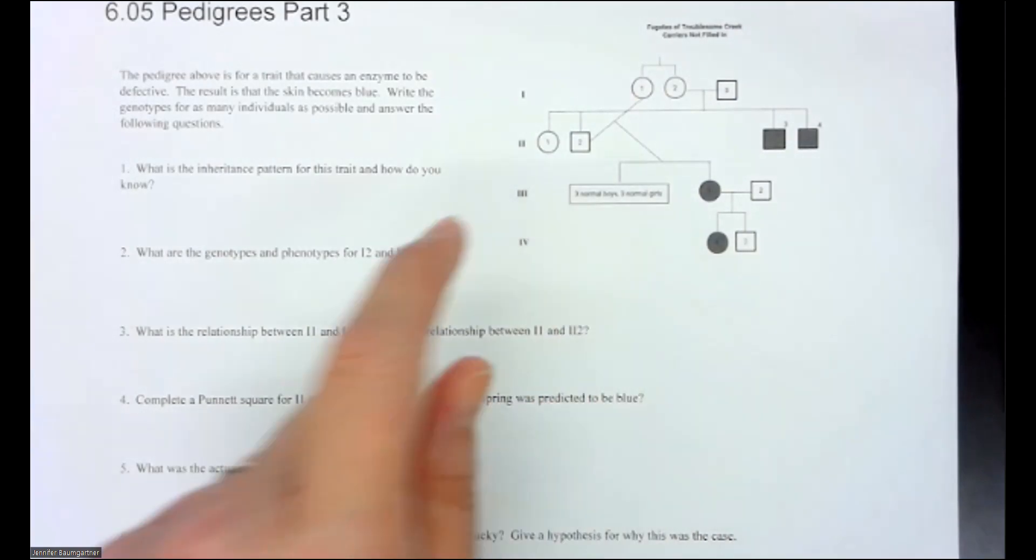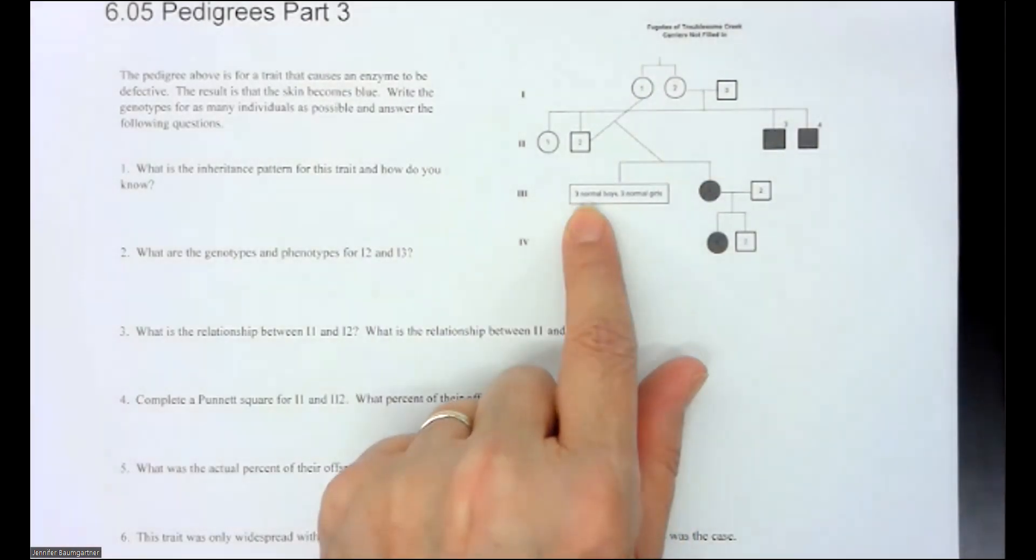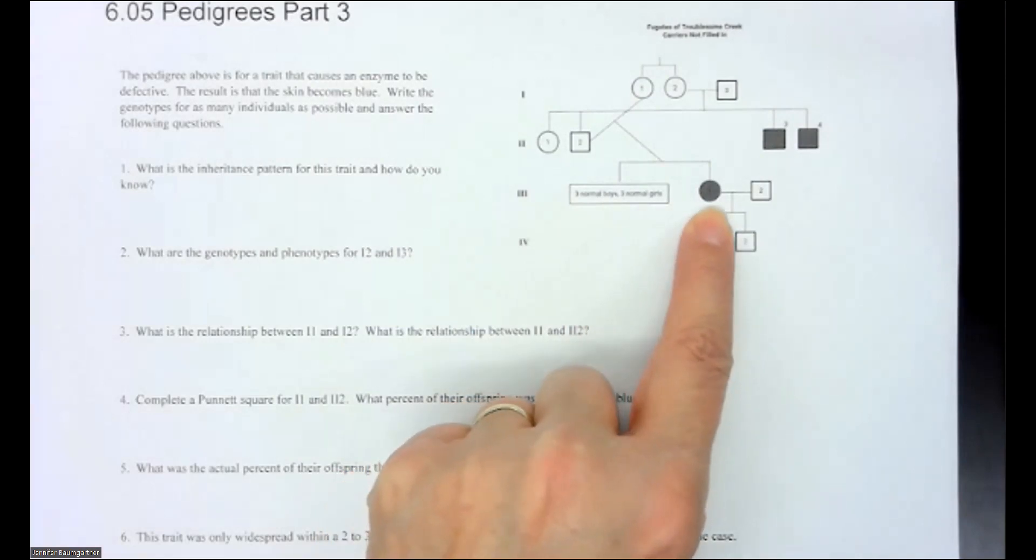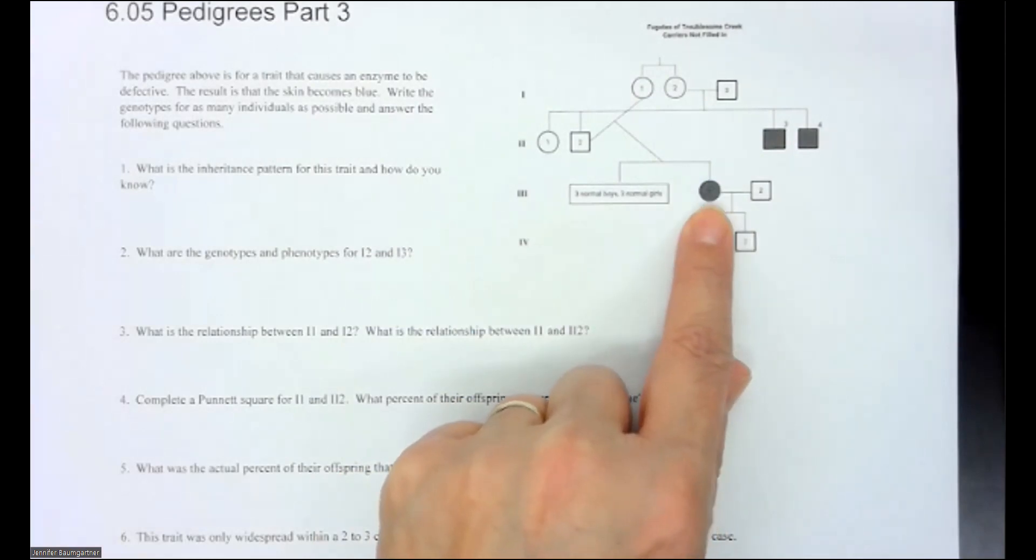Here we have two parents and they have a total of seven offspring. This says it's a little hard to read. Just remember, you can get this handout on my Teachers Pay Teachers website for free. So this whole packet comes and you can download it. But this says three normal boys, three normal girls, and then they had a daughter that had the disease. So they had seven children in total and only one had the disease.